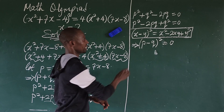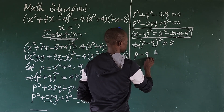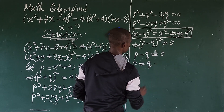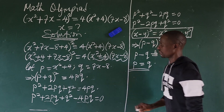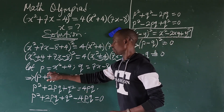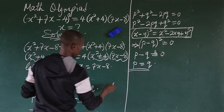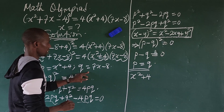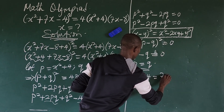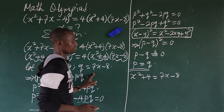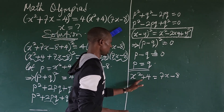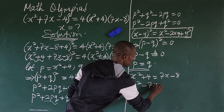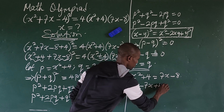Taking the square root of both sides gives us p - q = 0, which means p = q. Now let's substitute back. Replacing p and q gives us x² + 4 = 7x - 8. Moving everything to one side gives us x² - 7x + 4 + 8 = 0, that is x² - 7x + 12 = 0.